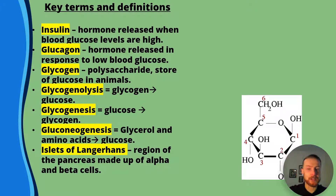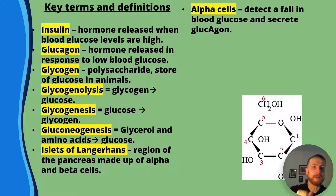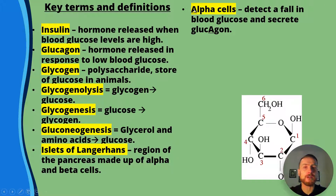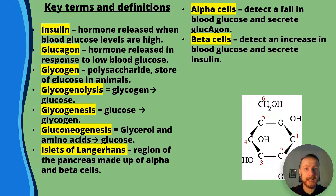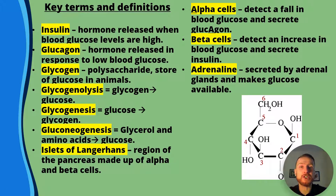The islets of Langerhans is a region of the pancreas made up of alpha and beta cells that secretes insulin and glucagon. The alpha cells detect a fall in blood glucose and secrete glucagon. I always tell my students: A in alpha, A in glucagon — so AA, alpha cells secrete glucagon. Beta cells detect an increase in blood glucose and secrete insulin. Adrenaline is secreted by the adrenal glands and makes glucose available for the fight-or-flight response.